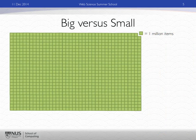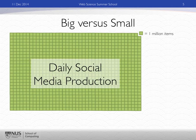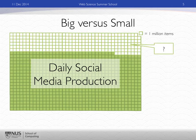So big versus small. I have 1,000 squares up here, which means 1 million items of posts per day are represented. This is basically on the order of what we as a society, as a civilization, produce each day on the read-write web, on Web 2.0 — daily social media production. What do you think that white square represents? That's 158 million items.